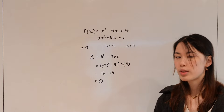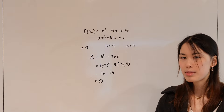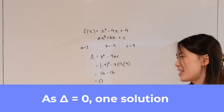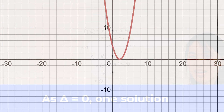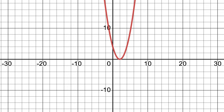If the discriminant is equal to 0, there is one real solution. If we plot it on a graph, it will look like this — you can clearly see that the parabola touches the x-axis at one distinct point.